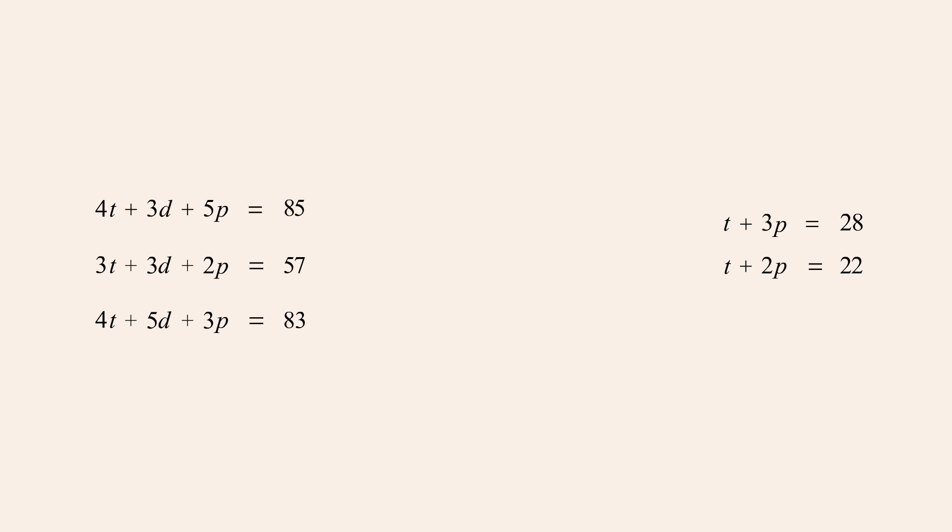This system of two equations in two variables can now be solved to find the values of t and p. Multiplying the bottom equation by negative 1 and adding the equations, we get p equals 6.